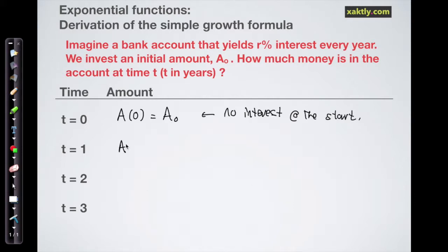But at the end of the first year, year one, what we have in there is our original amount, that hasn't gone anywhere, but we add on the interest rate multiplied by that amount. So r times A naught is how much money we've earned this year, how much interest we've earned.